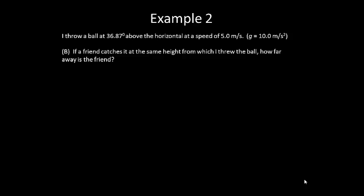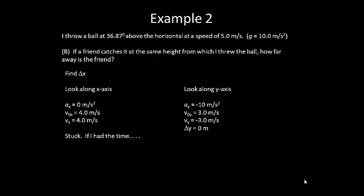Now here's a second question. If a friend catches it at the same height from which I threw the ball, how far away is the friend? So if we consider this, we're trying to find the displacement, delta x. We need to look along the x axis. Our acceleration in the x axis is zero. Our initial velocity and our final velocity in the x direction is 4 meters per second. And at this point, we're stuck. If we had the time though, we would be able to find our displacement in the x direction.